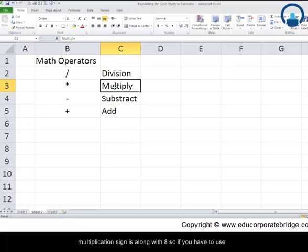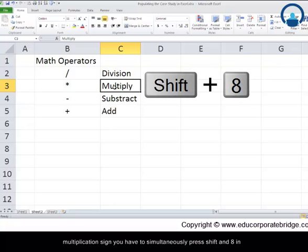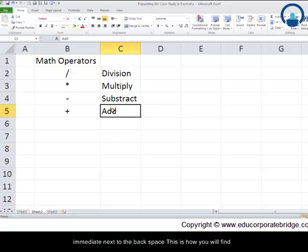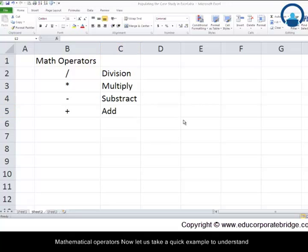So if you have to use a multiplication sign, you have to simultaneously press shift and 8 in order to activate multiplication. Subtract is essentially closer to the backspace on the left hand side, and likewise the addition is the immediate next to the backspace. This is how you will find the mathematical operators.